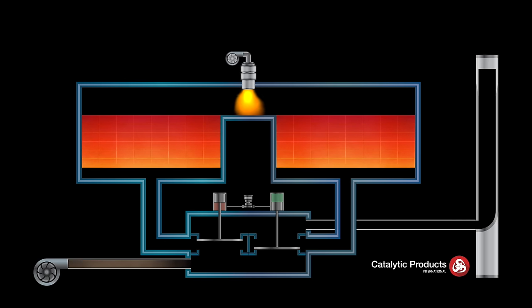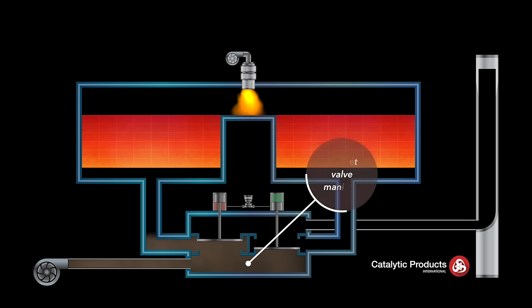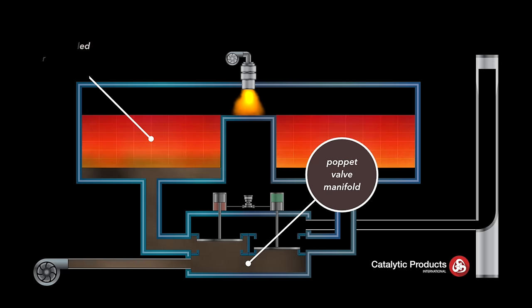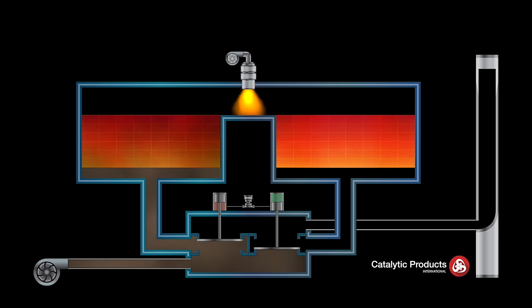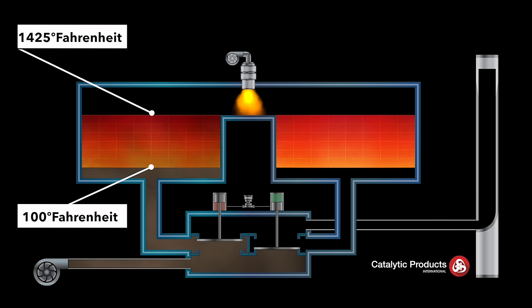The processed emissions are then directed into a poppet valve manifold where the untreated process stream enters the ceramic media filled regenerator column. The process stream is heated in the regenerator column from the inlet temperature of 100 degrees to over 1425 degrees Fahrenheit at the exit of the ceramic media.